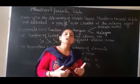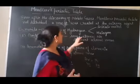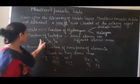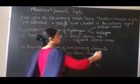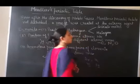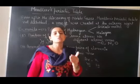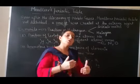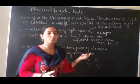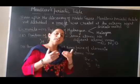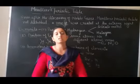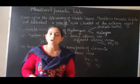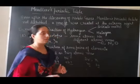The second demerit is the position of isotopes. As more elements were discovered, their isotopes also became known. Isotopes have the same atomic number but different atomic masses - for example, hydrogen has three isotopes with atomic number 1 but atomic masses 1, 2, and 3. Similarly, carbon, nitrogen, and oxygen have isotopes. It was unclear whether isotopes should be placed in the same column as the element or given a new column - nothing was clearly defined about where and how to place isotopes.